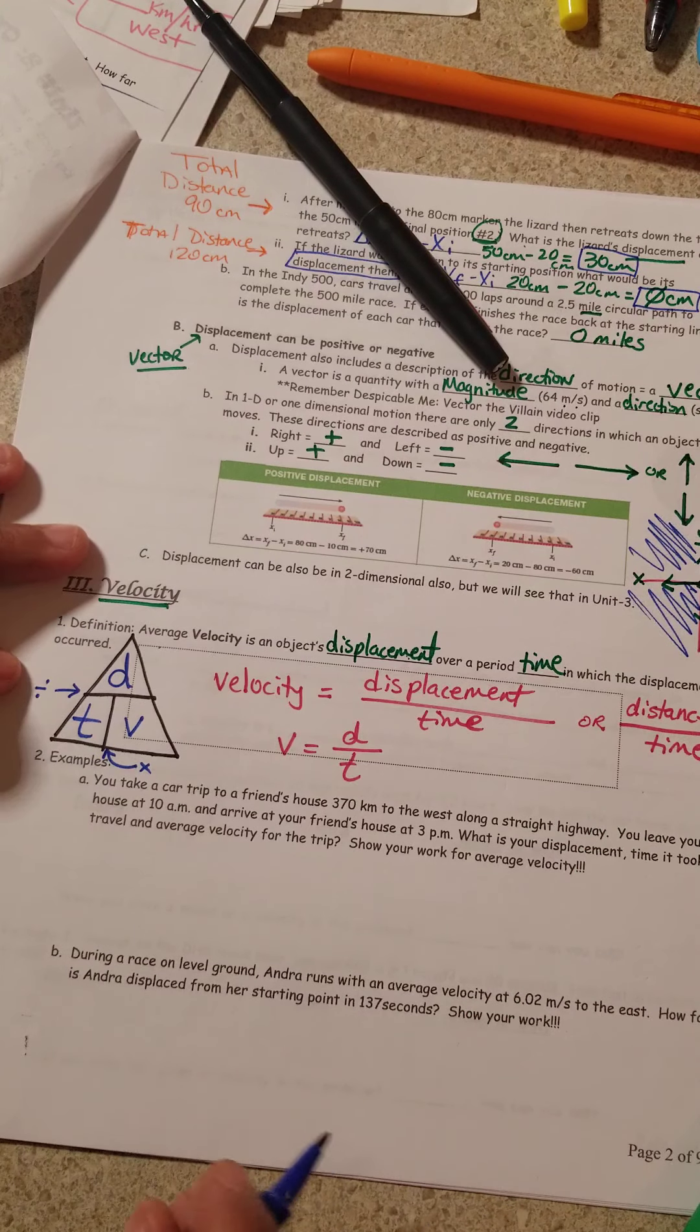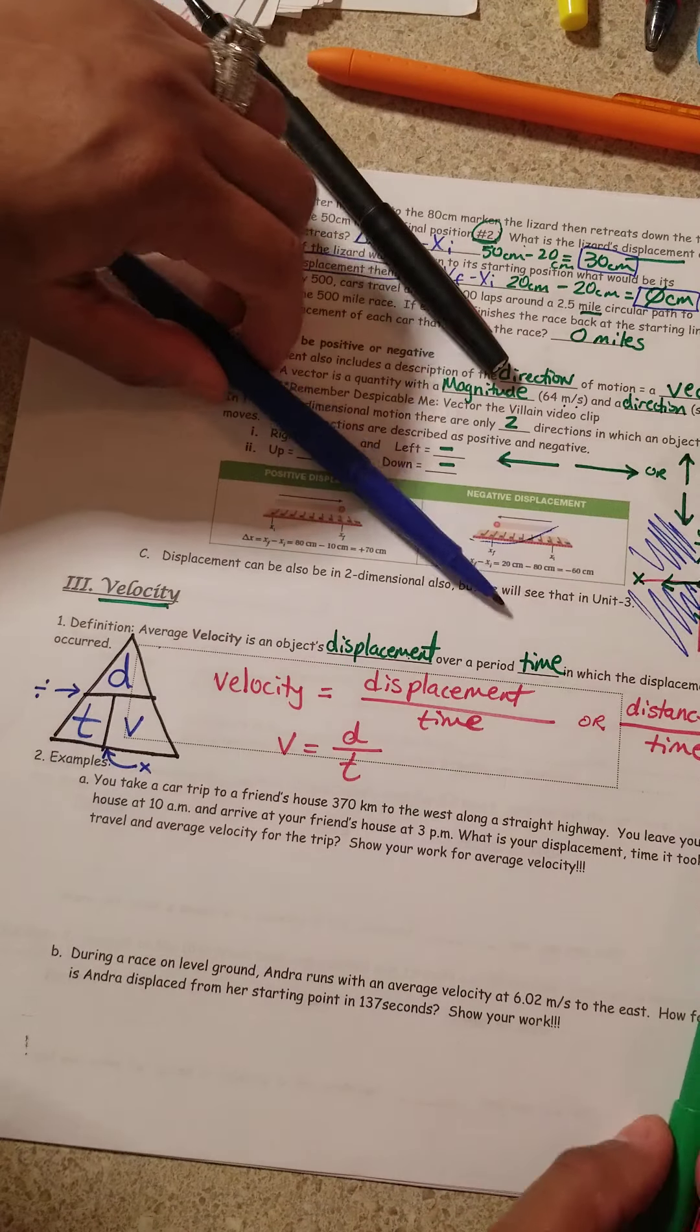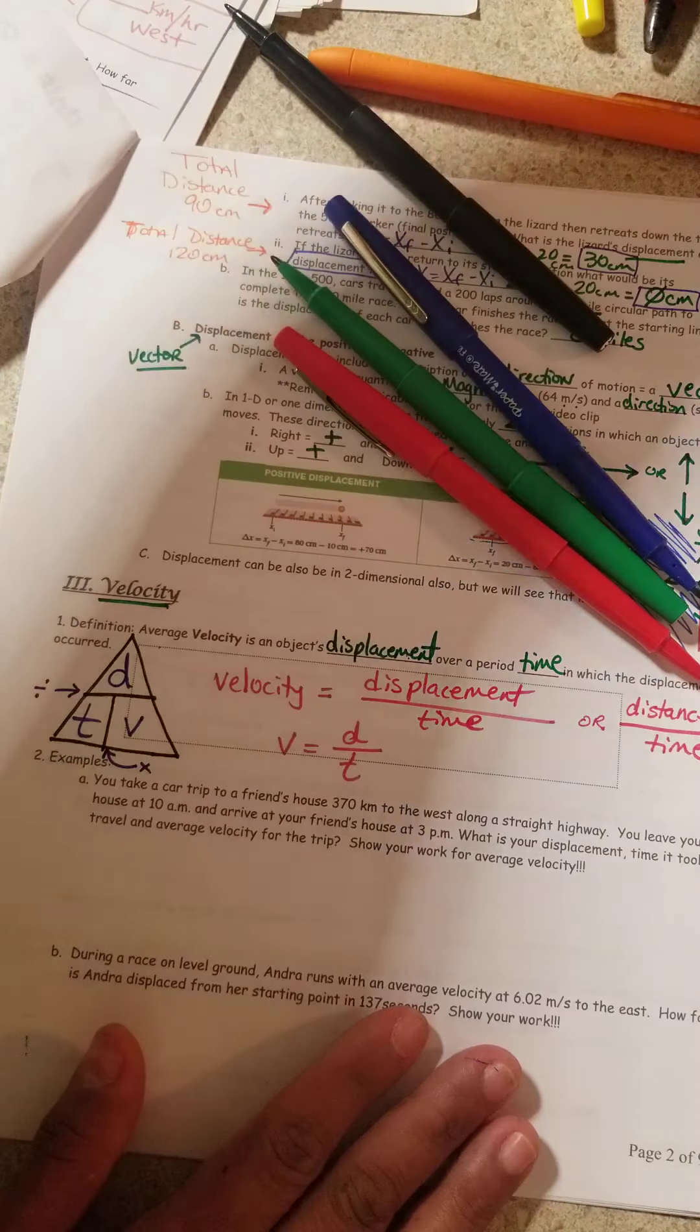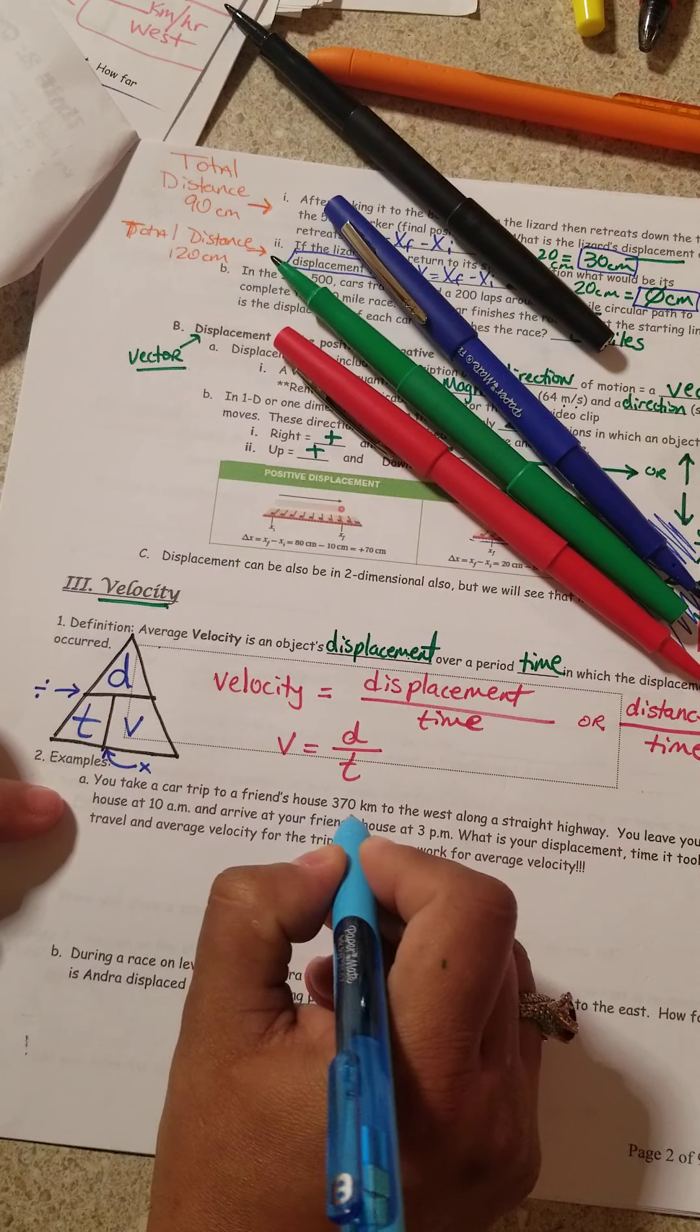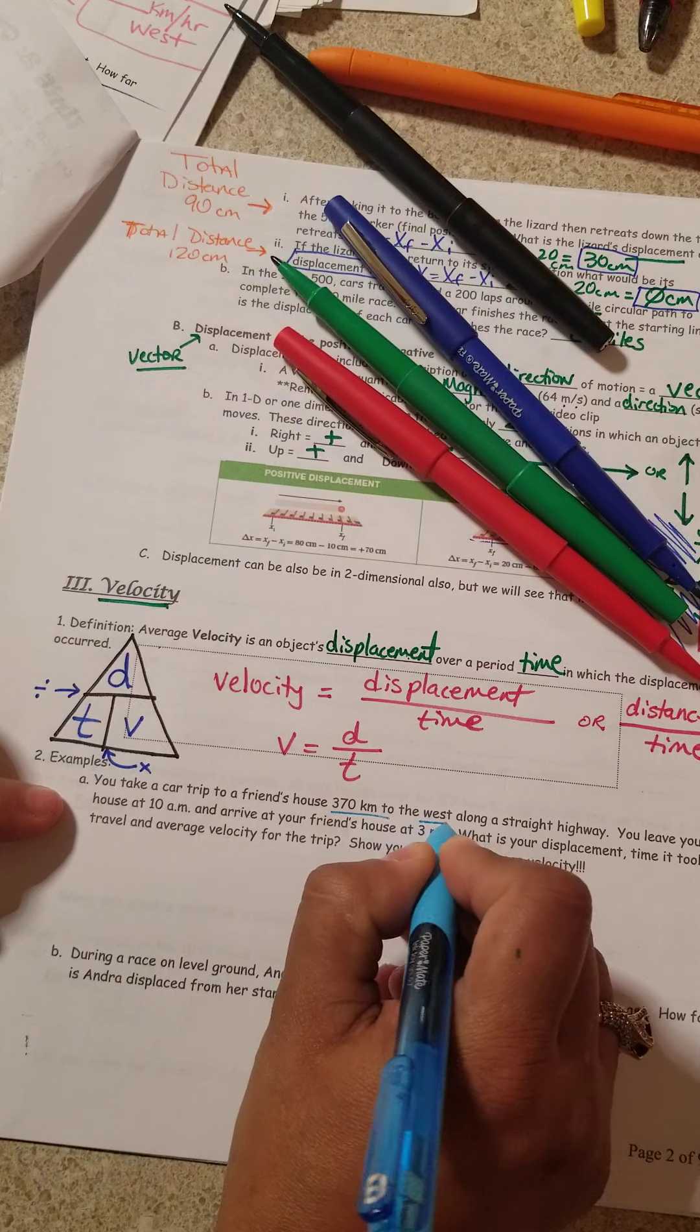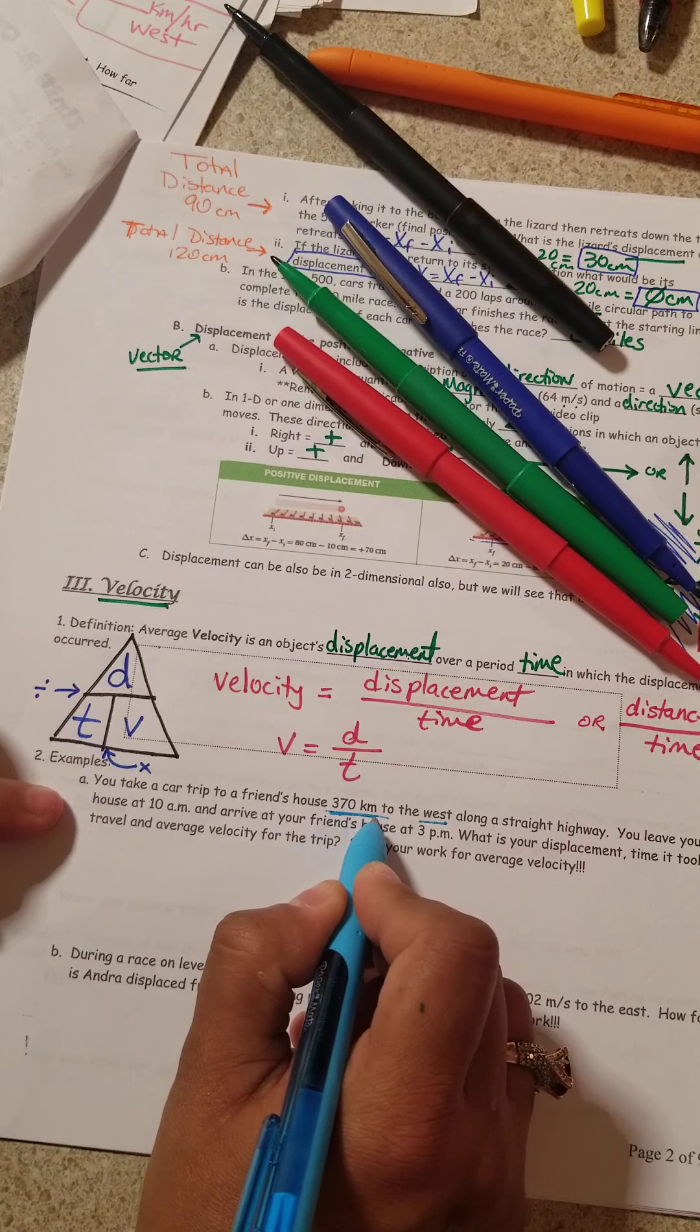Let's keep going. We've got a math problem. And again, our math problems in physics are going to be the majority of the time as word problems. So let's look at this word problem. You take a car trip to a friend's house that is 370 kilometers to the west. I'm going to pause. They gave me west. That is a direction. So this number is a distance or displacement. It is a displacement.